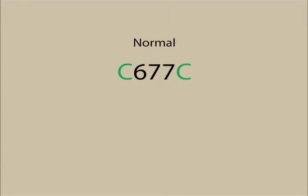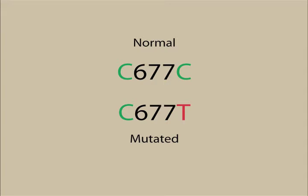A normal, unmutated gene is called C677C. This means at the 677th position on the gene, there are two cytosines. A mutated gene is called C677T. Notice that one of the cytosines has been replaced with a thymine. This one small change is enough to impair its functioning.